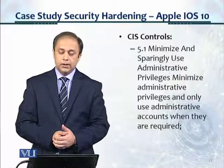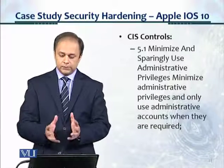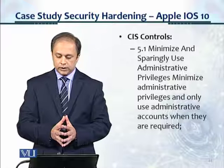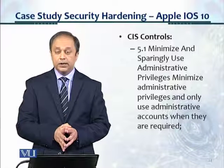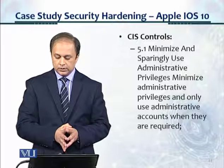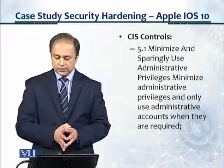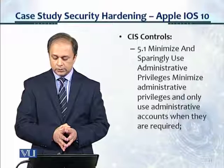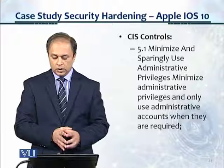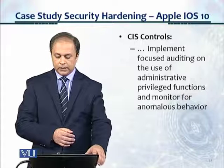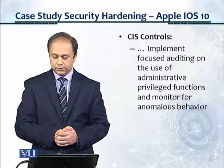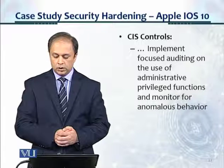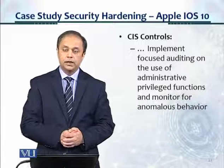CIS controls provides a cross-reference here. CIS controls 5.1: minimize and sparingly use administrative privileges — only use administrative accounts when they are required. Implement focused auditing on the use of administrative privileged functions and monitor for anomalous behavior.